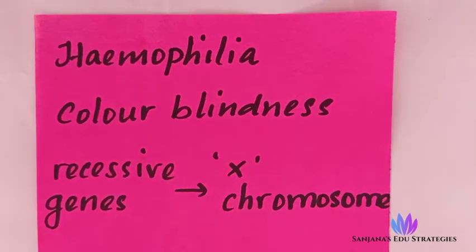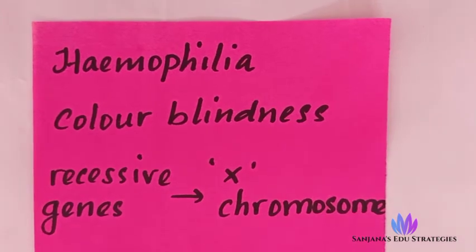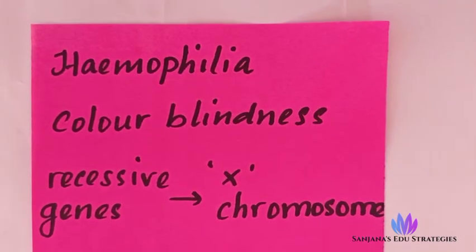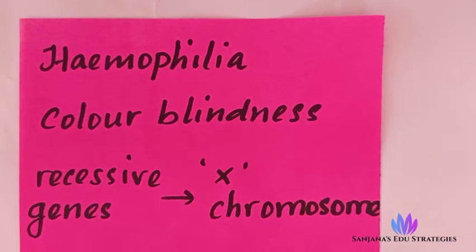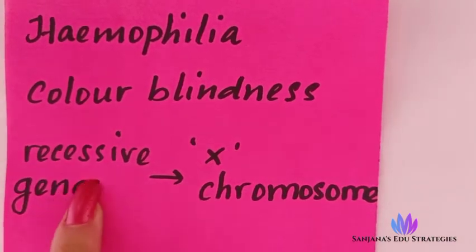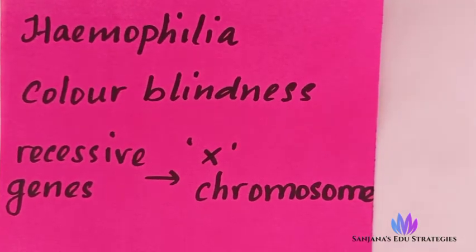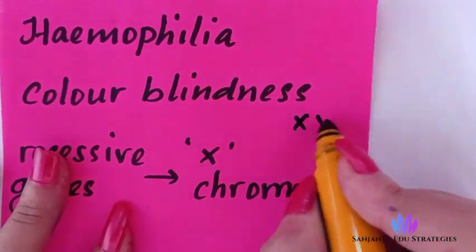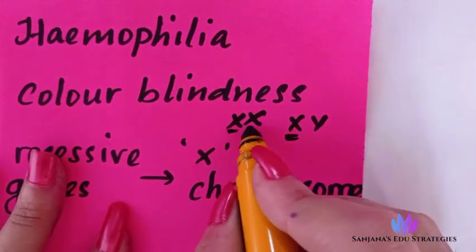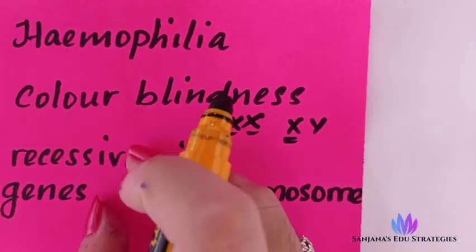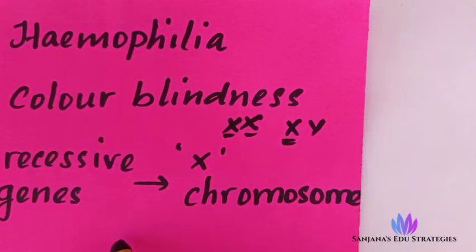First of all, you have to understand one main thing: we are going to learn about X-linked inheritance. What does X-linked inheritance mean? The recessive genes will be present in the X chromosome. In males we have only one X chromosome (XY), while females have two X chromosomes (XX).